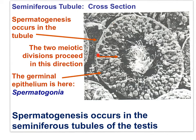In a cross-section of a seminiferous tubule, spermatogenesis occurs here. Meiosis starts with a diploid cell along the outer edge of the tubule, known as a spermatogonium. Two divisions of meiosis occur inward toward the lumen — you can see cells in some stage of meiosis, resulting in haploid gametes, the immature spermatid. The interstitial cells of Leydig are located in regions between the tubules. Sertoli cells provide nutrition to the developing spermatids.